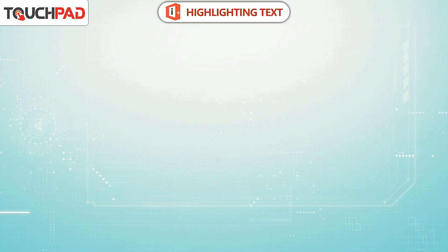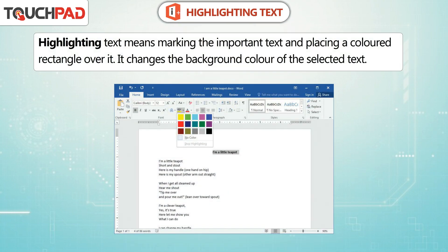Highlighting text means marking the important text and placing a coloured rectangle over it. It changes the background colour of the selected text.